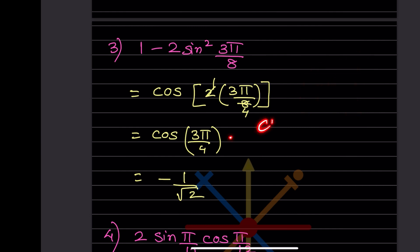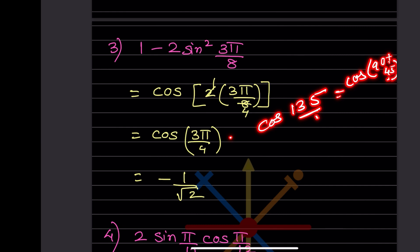So we need cos135°. We can write 135 = 90 + 45. cos(90+45) relates to cos45 = 1/√2, but we need to determine the sign from the quadrant.